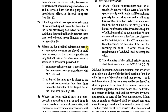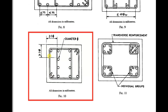Where longitudinal bars in a compression member are placed in more than one row, effective lateral support to inner row bars may be assumed to be provided if transverse reinforcement is provided for the outermost row per Clause 26.5.3.2, and no bar in the inner row is closer to the nearest compression face than 3 times the diameter of the largest bar in the inner row — see Figure 10.